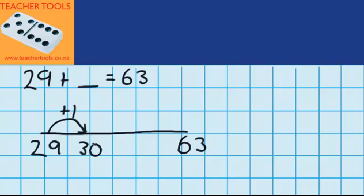Remember that tidy numbers are numbers like 30, 40, 50 and they're helpful for this next jump. Now that I'm at 30, I'm going to have to do another jump to get me up to 63. The reason I jumped to a tidy number to start with is that it makes this second jump really easy.